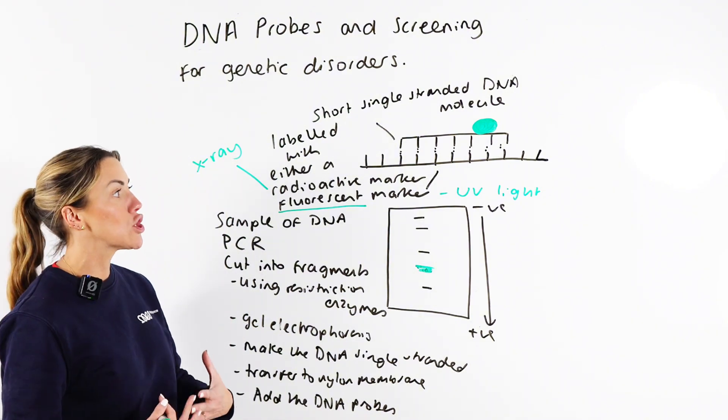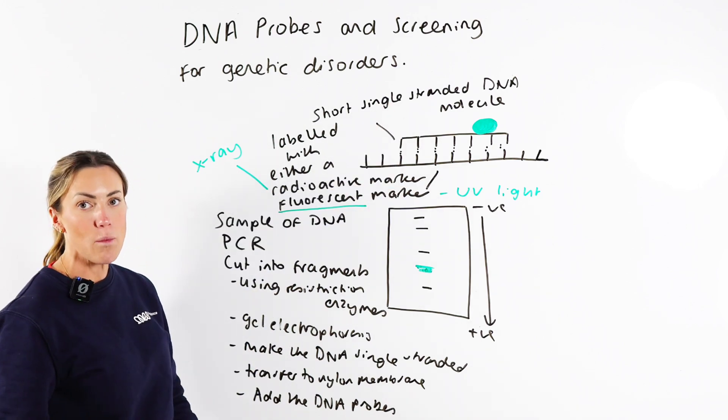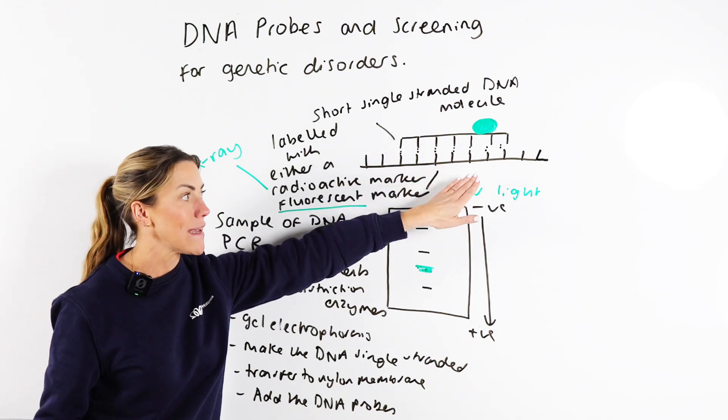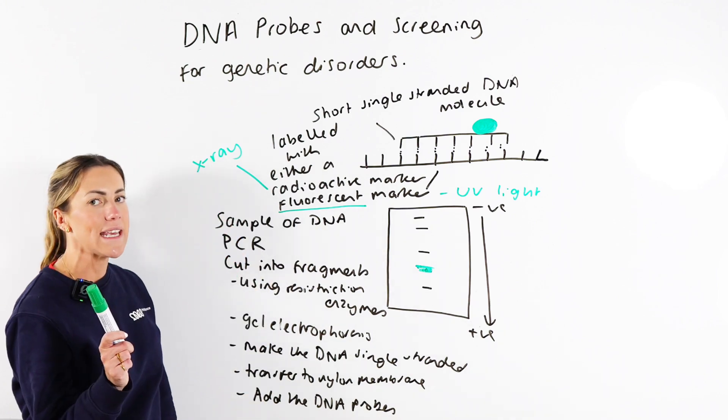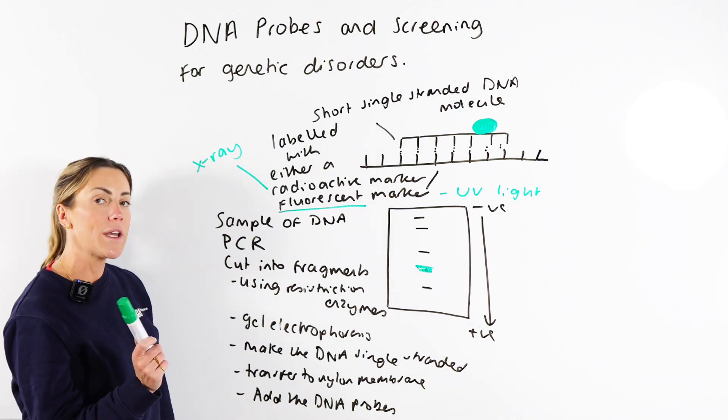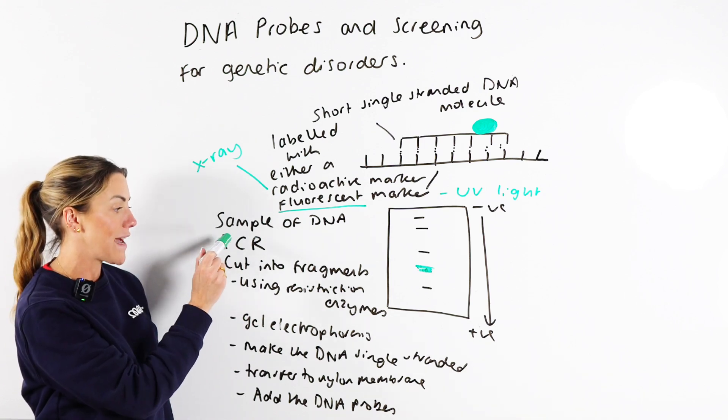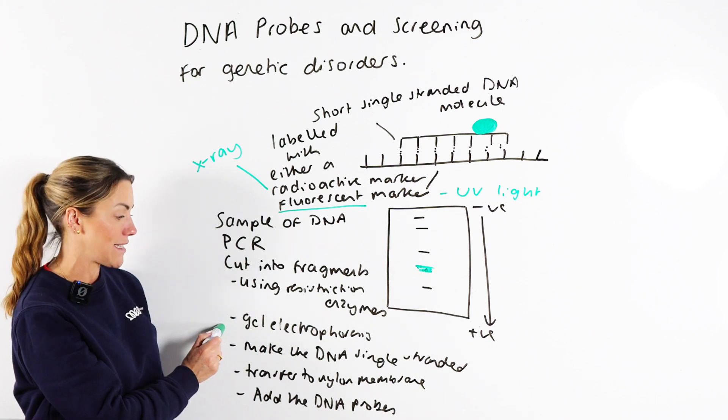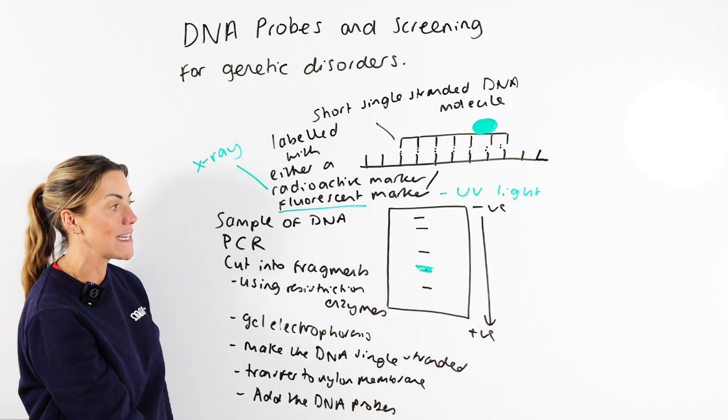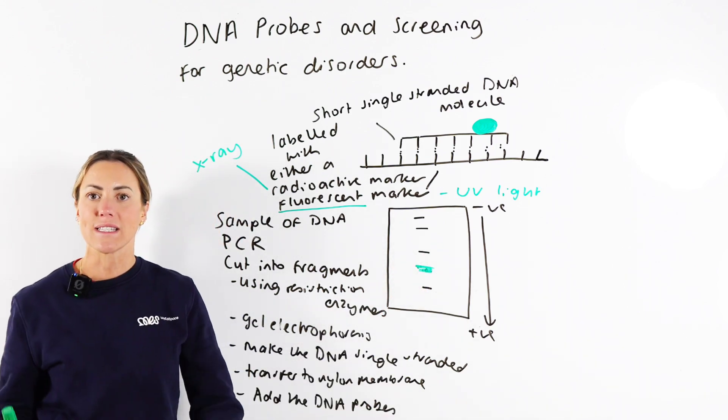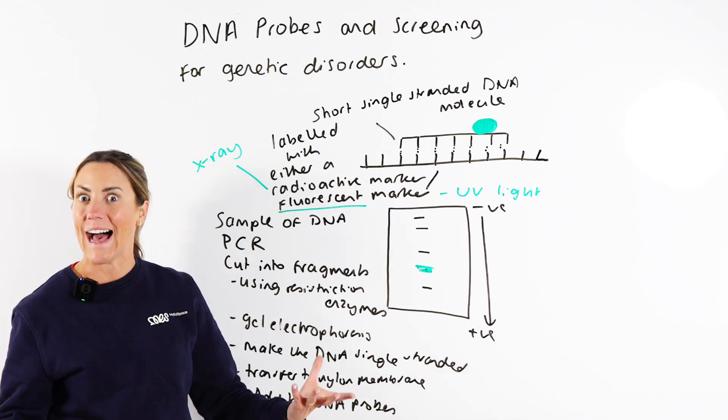Make sure you know what a DNA probe is. Make sure you understand the basic idea of how they work, complementary base pairing to a base sequence on an allele of interest. But then make sure you can piece together your other techniques from the gene technology unit. So you could explain how you can go all the way from just having a sample of their DNA, amplifying it, cutting it, using gel electrophoresis to separate the fragments, then adding the DNA probes once you've made the DNA single-stranded, and then visualizing so you can see where the probes have annealed and therefore which alleles that individual has.